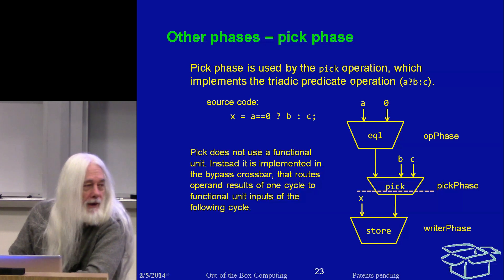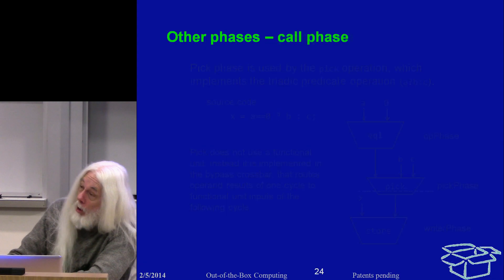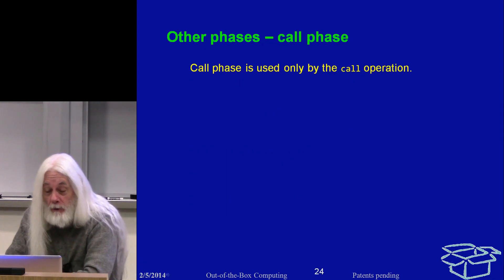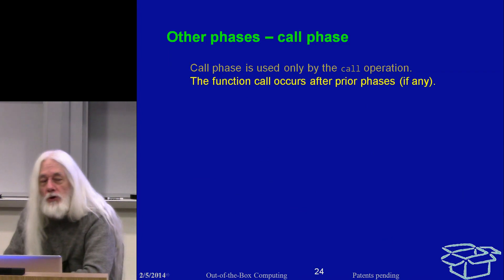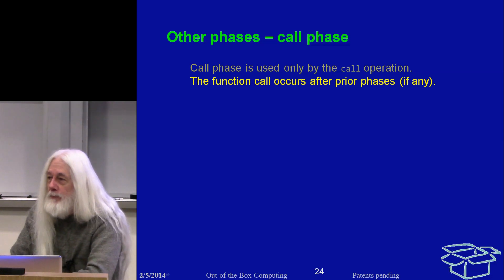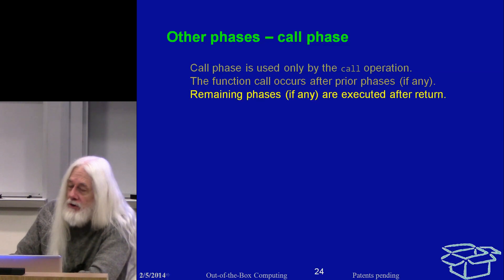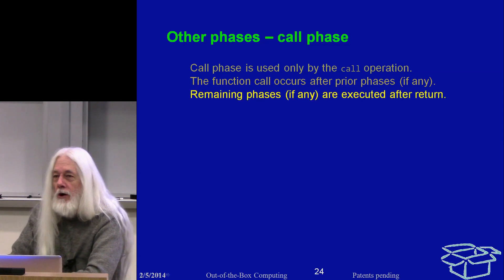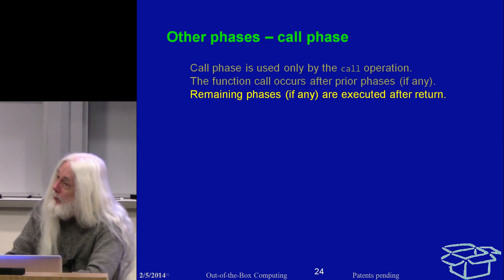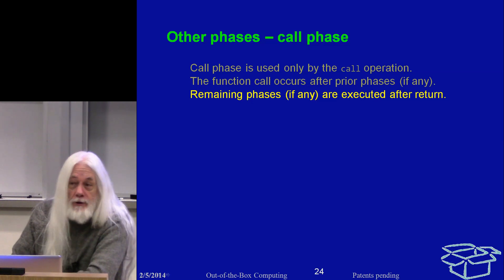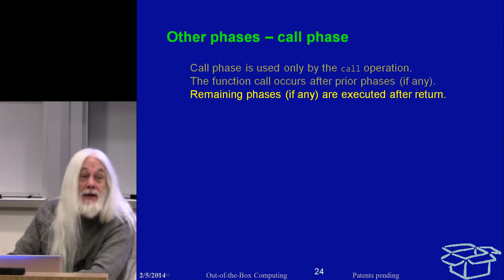Call phase is used only by the call operation. Function calls within an instruction occur after any prior phase of the same instruction, and the remaining phases of that instruction are executed after the call returns. What happens when you have a call is that the front half of the instruction executes, then you do the call, the return comes back, and then you do the back half of the same instruction.